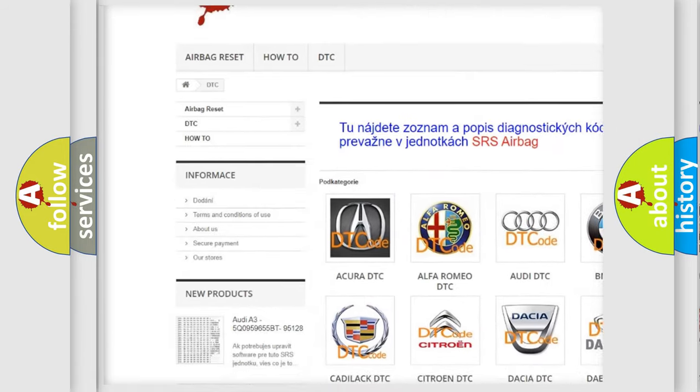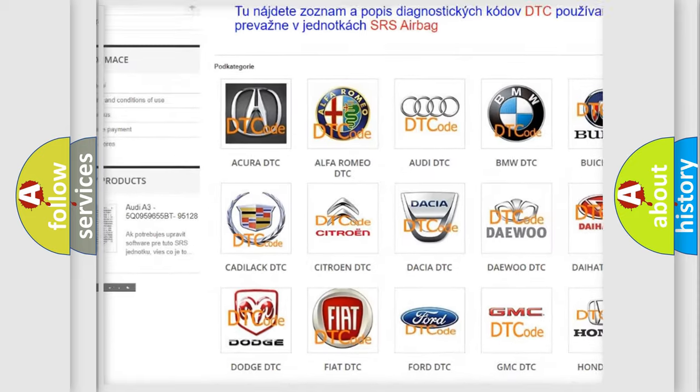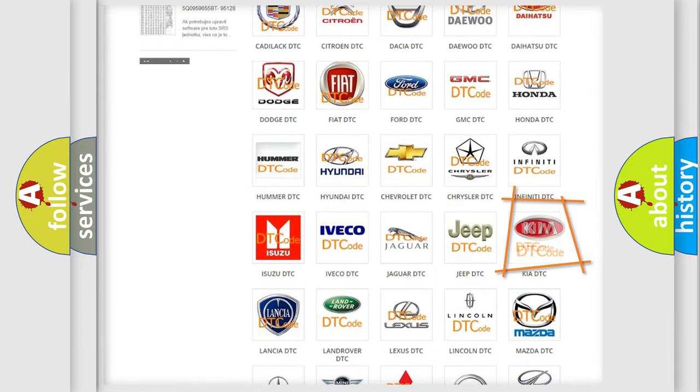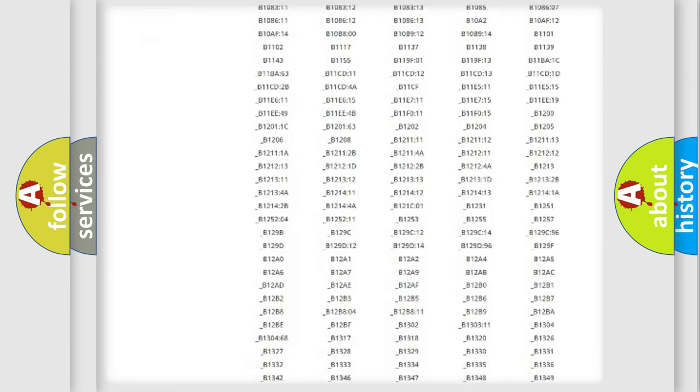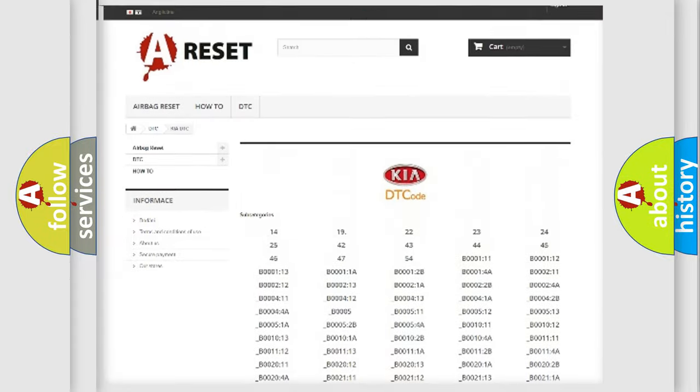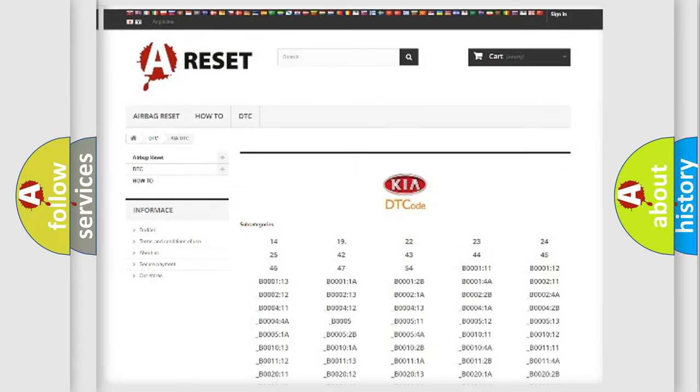Our website airbagreset.sk produces useful videos for you. You do not have to go through the OBD2 protocol anymore to know how to troubleshoot any car breakdown. You will find all the diagnostic codes that can be diagnosed in Kia vehicles, and also many other useful things.